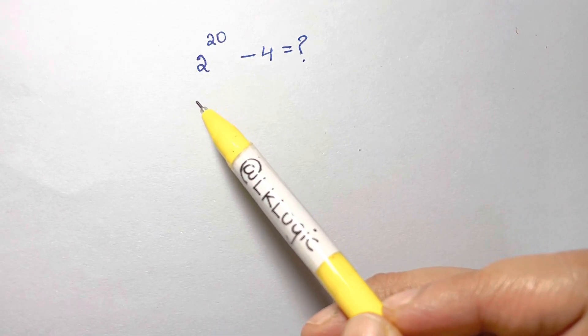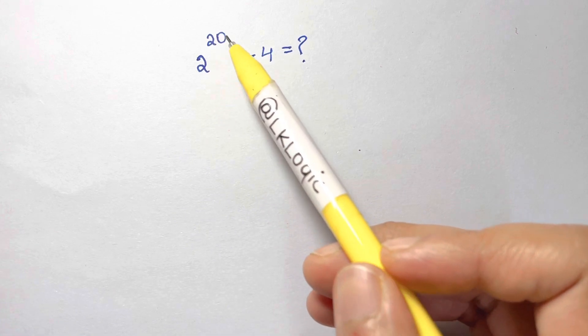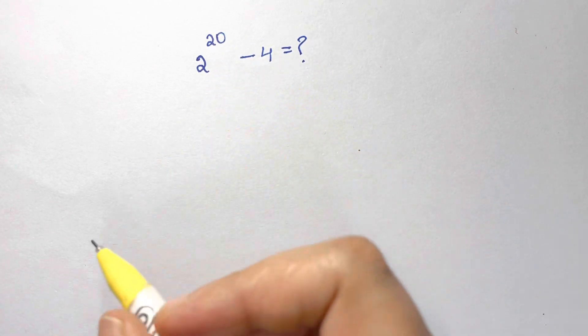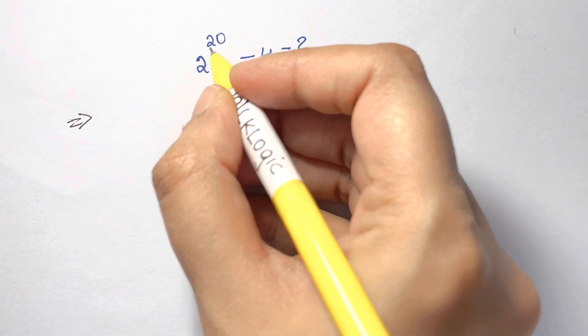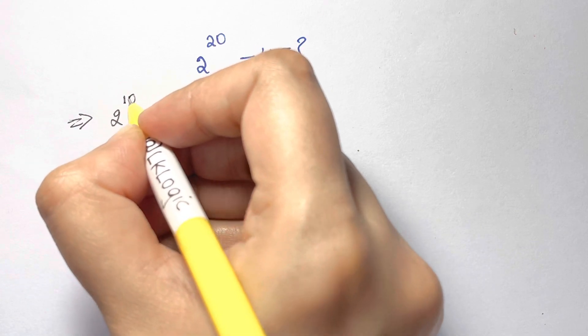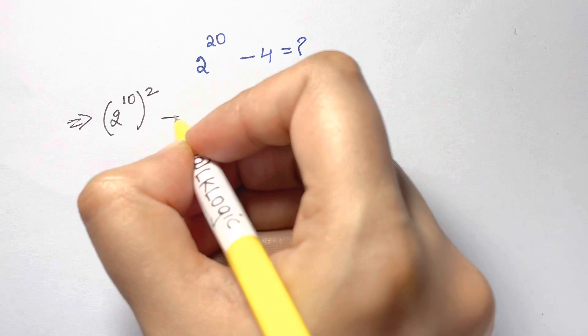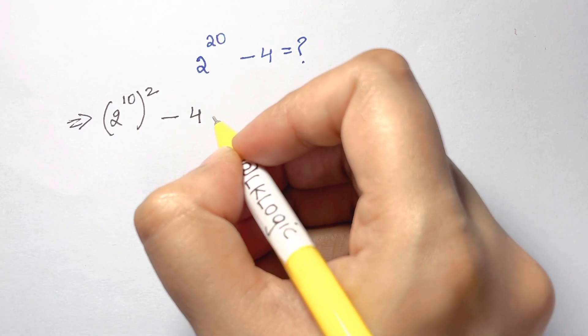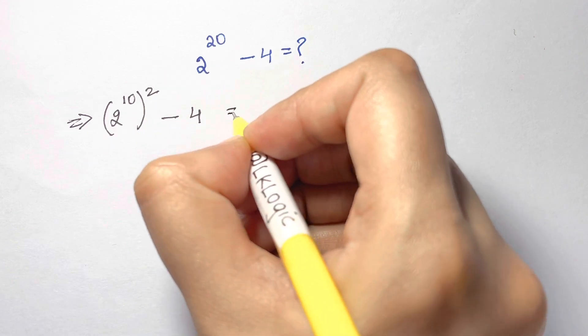Hi everyone, I'm back with another math olympiad question, a very nice one. Here it says 2 to the power of 20 minus 4 equals what. So first, what we're going to do is let's write down 2 to the power of 20 as 10 times 2 minus this 4.